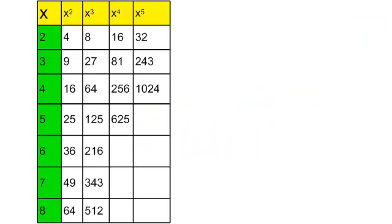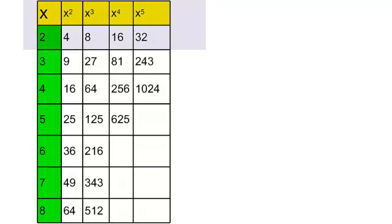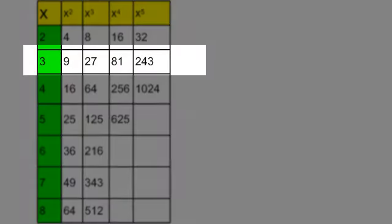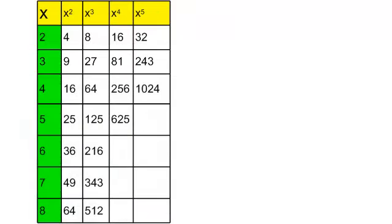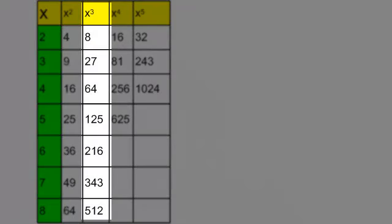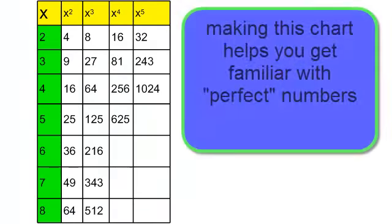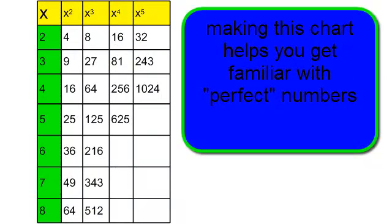What I'm showing you now is something you can make on a little index card. If these were your x values and you square, cube, or take them to the 4th power: 2 squared is 4, 2 cubed is 8, 2 to the 4th is 16, 2 to the 5th is 32. Then do this with 3: 3 squared is 9, 3 cubed is 27, 3 to the 4th is 81, 3 to the 5th is 243. Everything in this column would be perfect squares, this column perfect cubes, and so on. That may help you when working with radicals. Good luck!